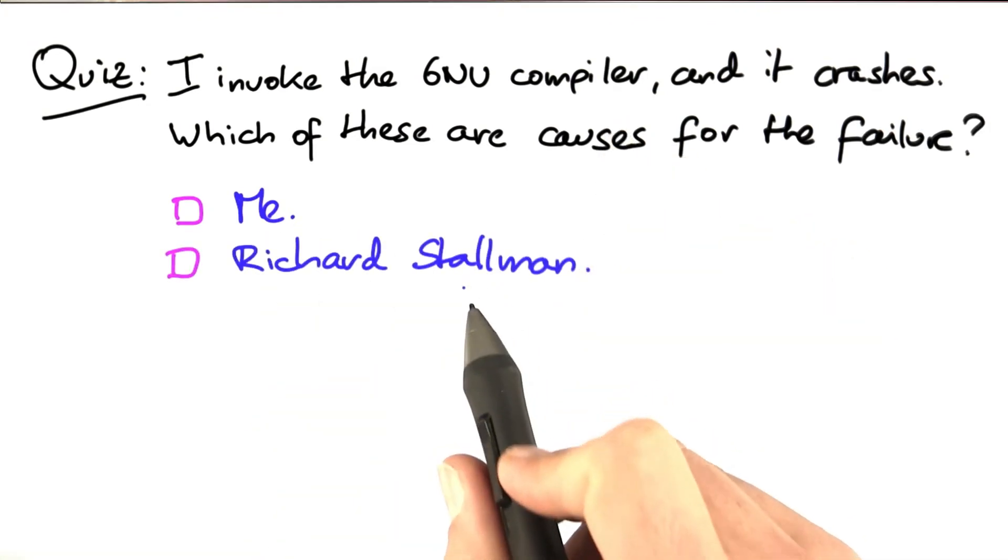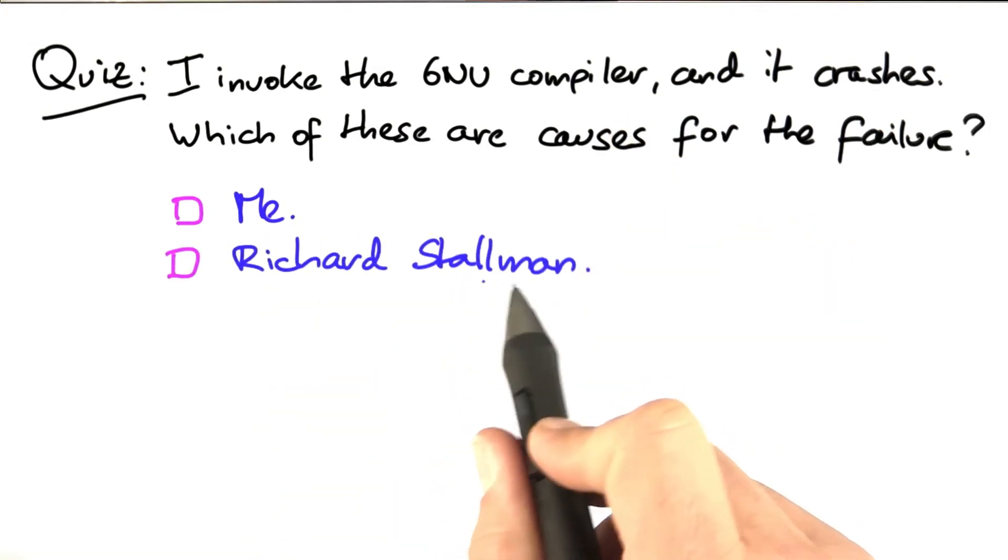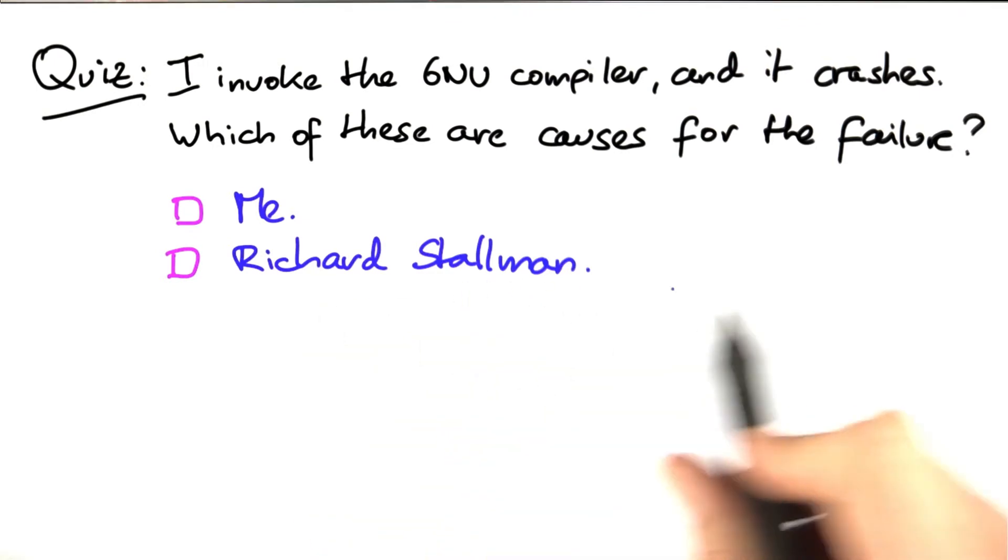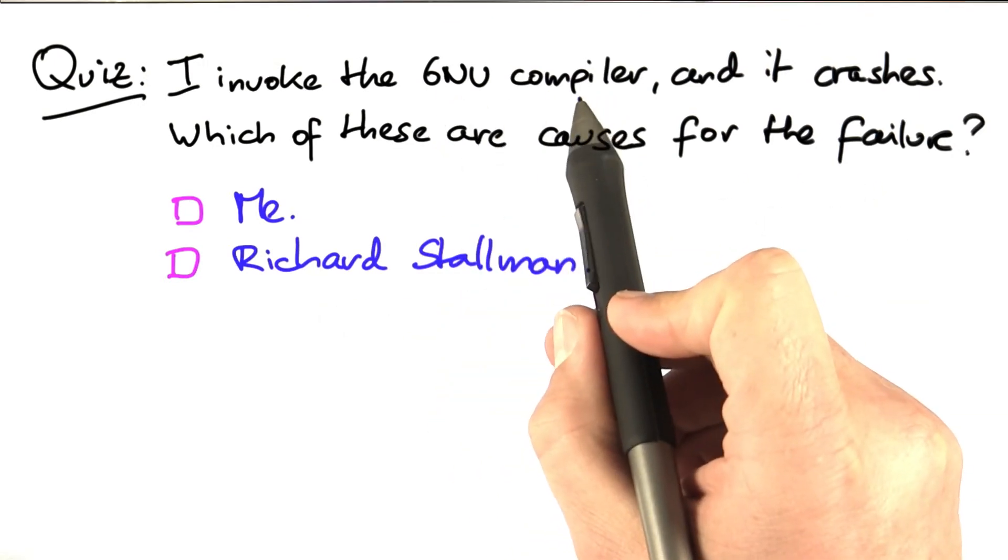Or is it Richard Stallman, the founder of the GNU project? Because without Stallman, no GNU compiler, no crash?